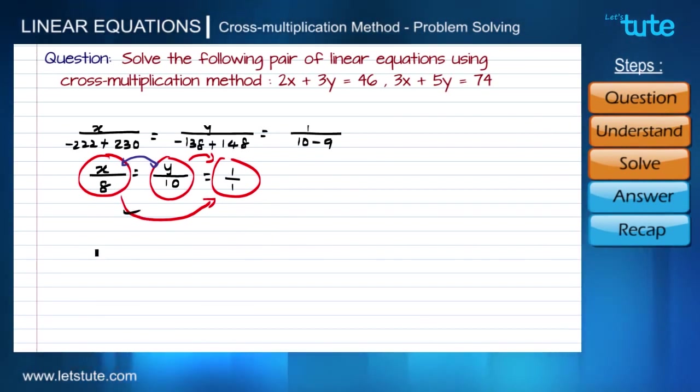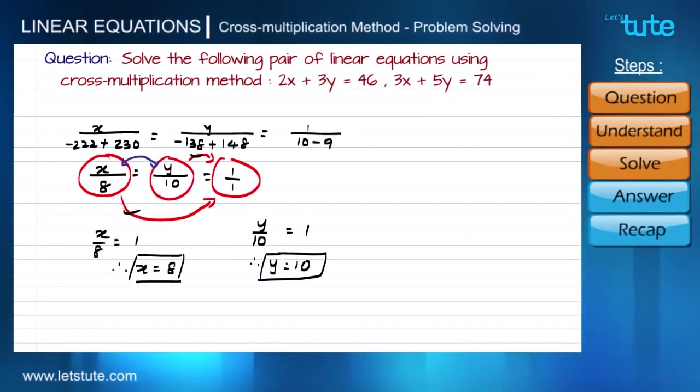Let us start with this combination: x by 8 equals to 1 by 1, that is 1. Therefore, x becomes 8. We got the value for x. Now let us take this combination: y upon 10 equals to 1 by 1, that is 1. Therefore, y equals to 10. We got the value for y.